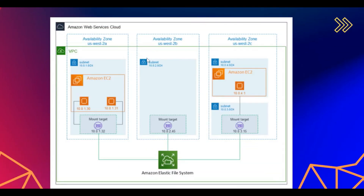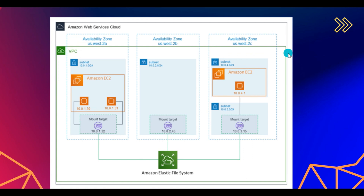Looking at the diagram on screen, you can see an example where EFS storage is mounted on multiple availability zones — US-West-2A, US-West-2B, and US-West-2C. This means you can mount EFS on multiple zones, whereas with EBS you can only mount in one availability zone.